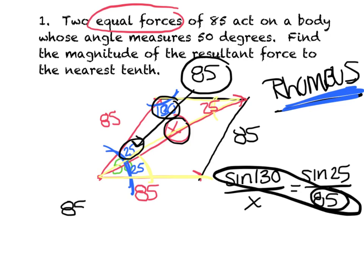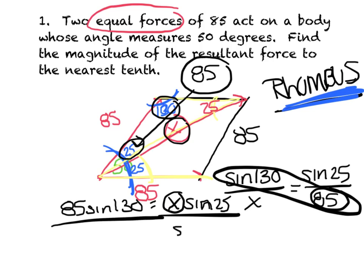And my goal is to get x by itself, so I'm just going to divide both sides by the sine of 25. And a nice little plug and chug in your calculator. Make sure you're in that degree mode, and you should have it. Then I get a nice answer of x equals 154, and it said to the nearest tenth, which makes that point 1. And there you go.